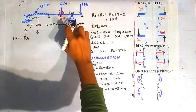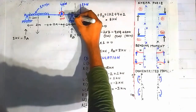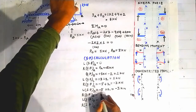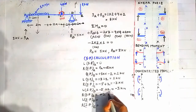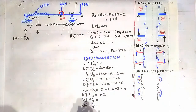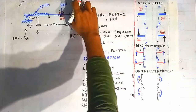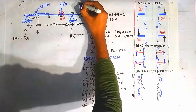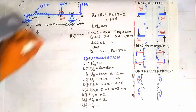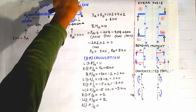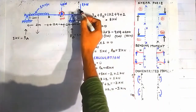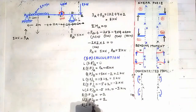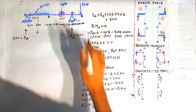For shear force on the right side of point D, we construct a section to the right of point D. Looking on the right side, only the 2 kN force accounts for the shear force, giving +2 kN. The shear force on the left side of point E is also +2 kN. On the right side of point E, the beam terminates so the shear force is 0.